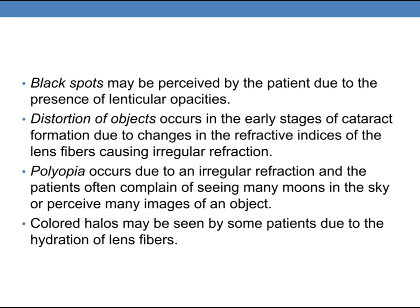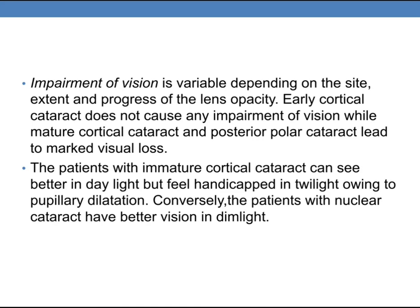Black spots may be perceived by the patient due to the presence of lenticular opacities. Distortion of objects occurs in the early stage due to changes in the refractive indices of the lens fibers, causing irregular refraction. Polyopia occurs due to irregular refraction, and patients often complain of seeing many moons in the sky or perceiving many images of an object. Colored halos may be seen by some patients due to hydration of lens fibers. Impairment of vision is variable depending on the site, extent, and progress of the lens opacity. Early cortical cataract does not cause any impairment of vision, while mature cortical cataract and posterior polar cataract lead to marked visual loss. Patients with immature cortical cataract can see better in daylight but feel handicapped in twilight or with pupillary dilatation.